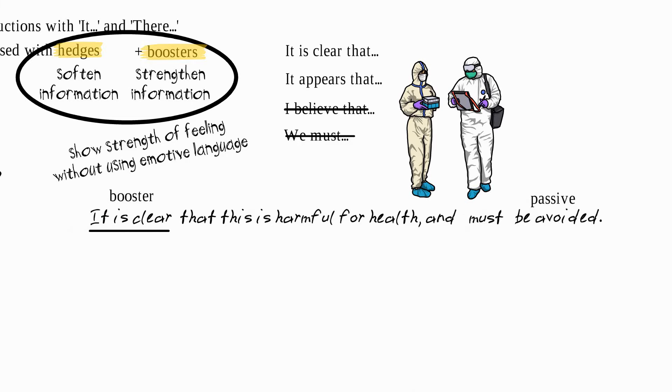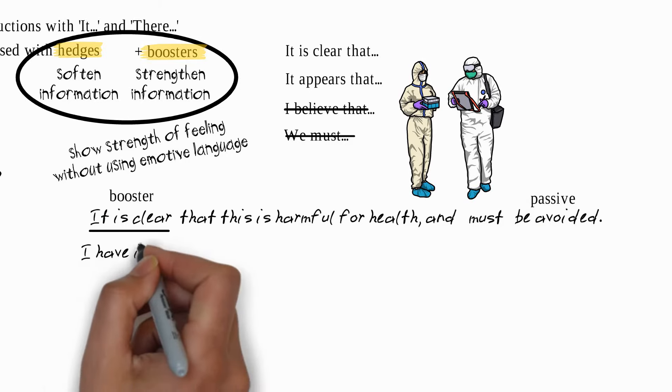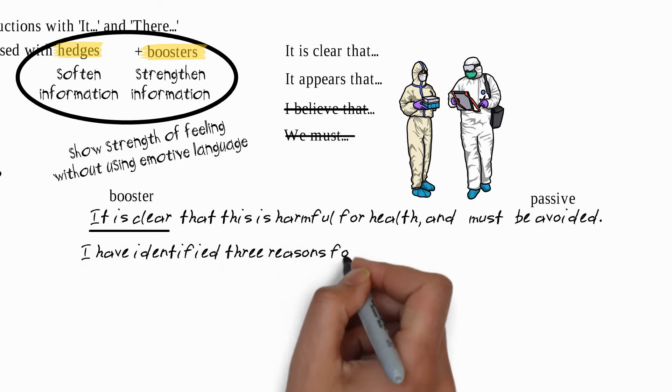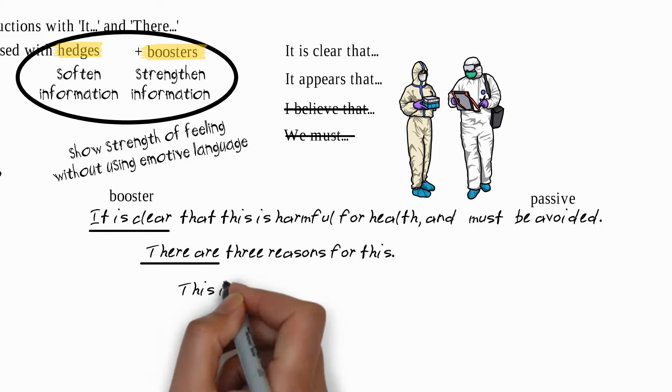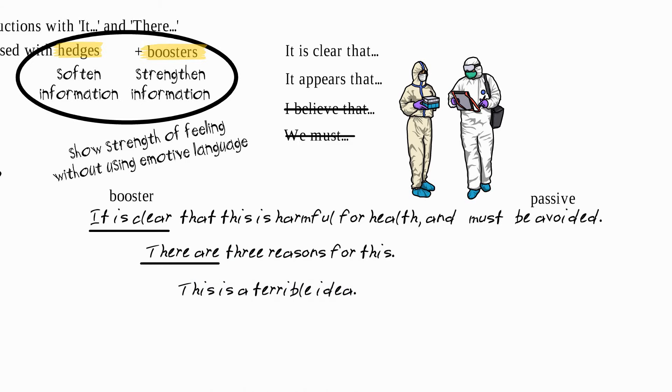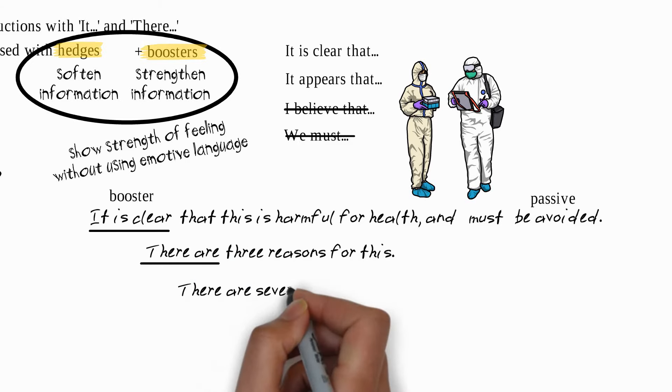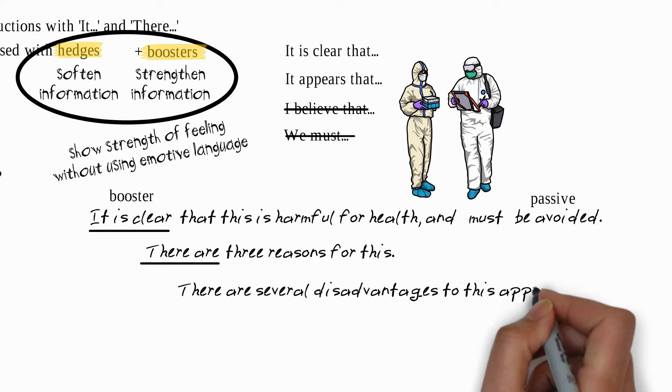A couple of other examples, this time using the word there. Rather than I have identified three reasons for this, we can say there are three reasons for this. And rather than this is a terrible idea, which is very emotive, we can say there are several disadvantages to this approach, which is not emotive and would be much more objective.